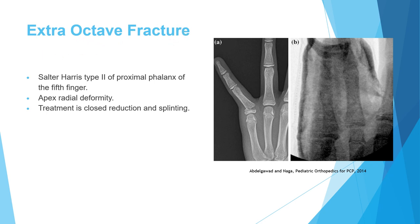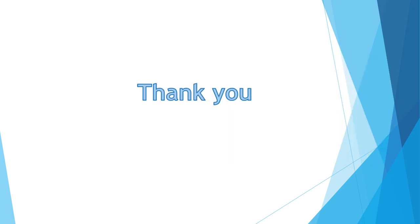A very common fracture is the extra-octave fracture, which is a Salter-Harris type 2 of the proximal phalanx of the small finger and it always goes ulnar. Treatment is closed reduction — you bring this finger this way with a fulcrum and bring the end this way — and then splinting of the fracture. With this we finish the pediatric trauma for both the lower and upper extremity. I hope it was useful and helpful for your study.